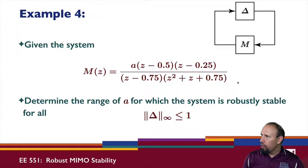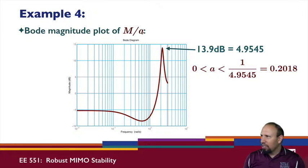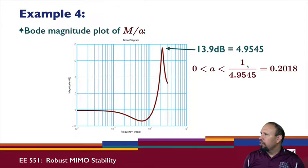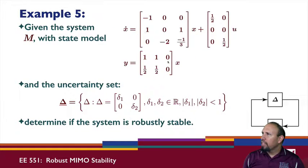One approach is to factor 'a' out and compute the H-infinity norm of what remains. Using a Bode plot of M/a, the peak value is found to be 4.954 (about 13.9 dB). For the H-infinity norm to be strictly less than one, we need 'a' strictly less than 1/4.954, which gives approximately 0.2. So for any 'a' strictly less than 0.2, the system is robustly stable.